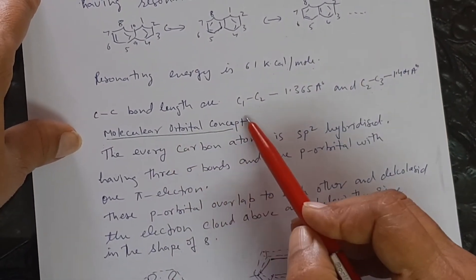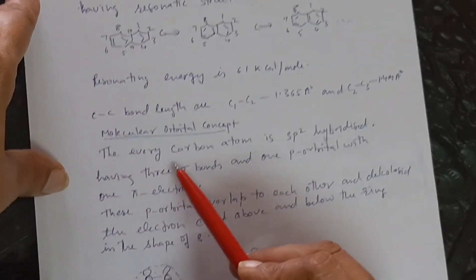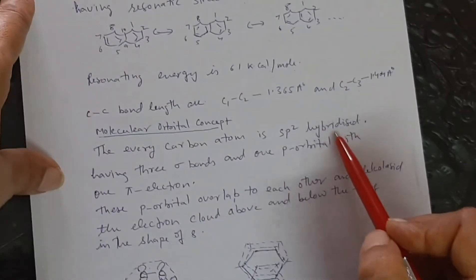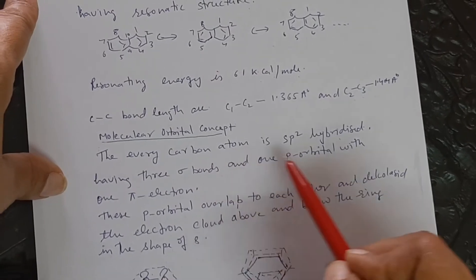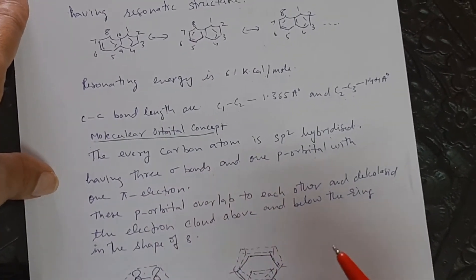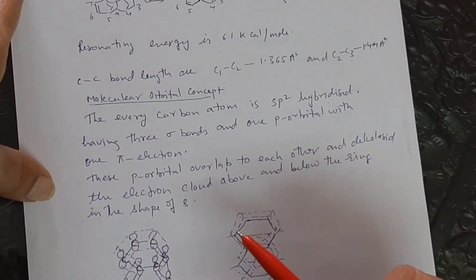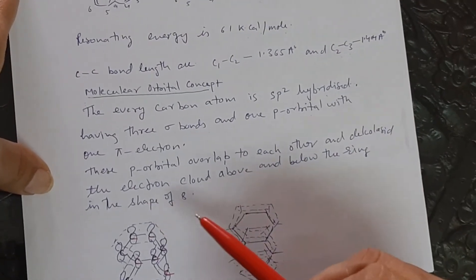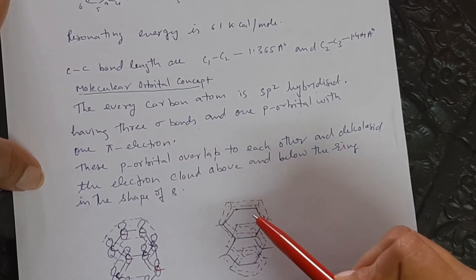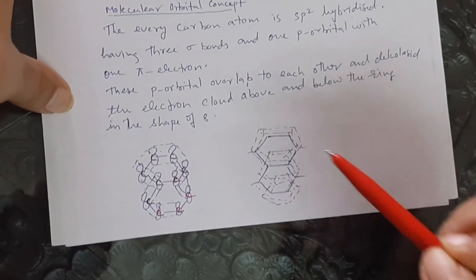The molecular orbital concept of naphthalene shows that each carbon atom is sp2 hybridized, thus having 3 sigma bonds and 1 p orbital with 1 pi electron. The p orbitals in naphthalene overlap to each other to give the delocalized system and it gives the electron cloud above and below the plane of the ring.